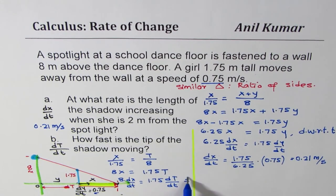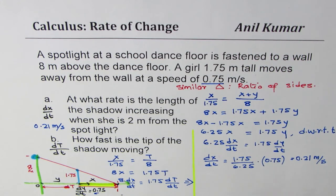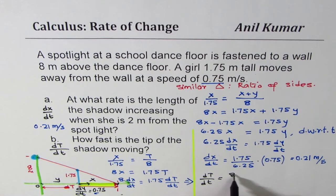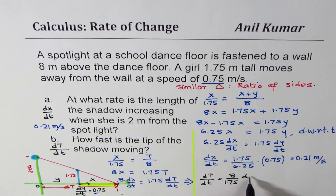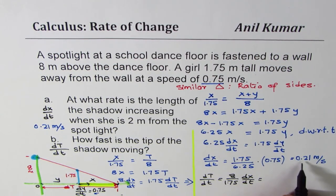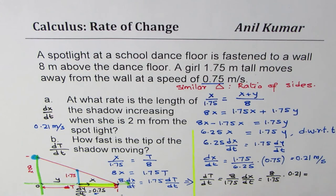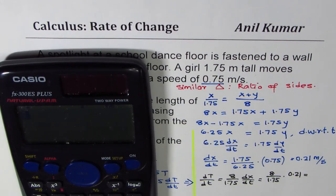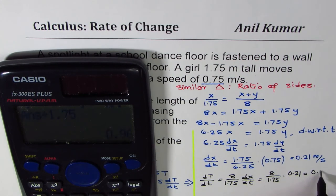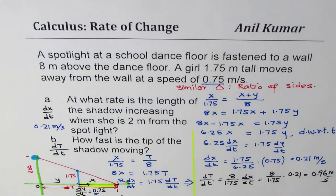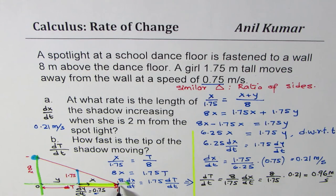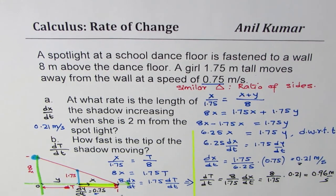Solving for dT/dt: it equals 8 divided by 1.75 times dx/dt. We already found dx/dt equals 0.21, so substituting: dT/dt equals 8 divided by 1.75 times 0.21, which equals 0.96 meters per second. To find the change in the tip of the shadow, we use the dx/dt value we already obtained.